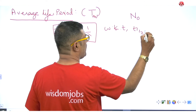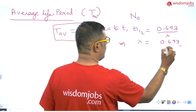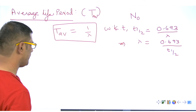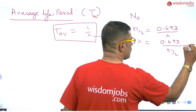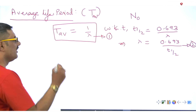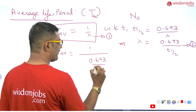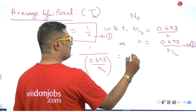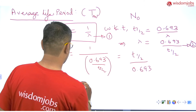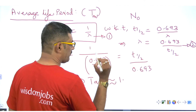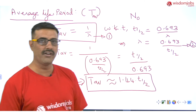We know that t-half equals 0.693 by lambda, which means lambda equals 0.693 upon t-half. Substituting this value of lambda into the expression for T-av: T-av equals 1 divided by (0.693 / t-half), which simplifies to T-av equals t-half divided by 0.693. Therefore T-av is approximately equal to 1.44 times t-half. This is the relation between average lifetime and the half-life period of a radioactive substance.